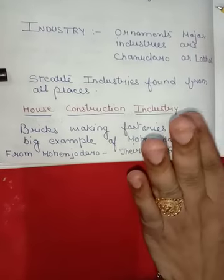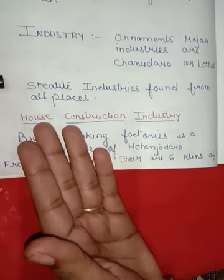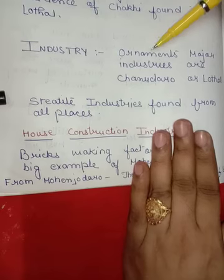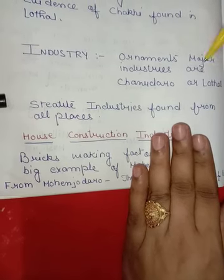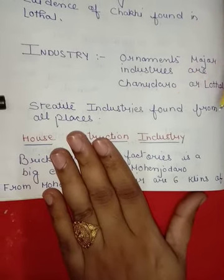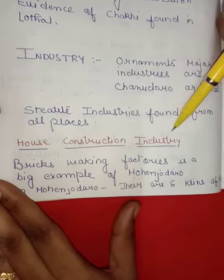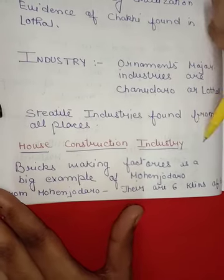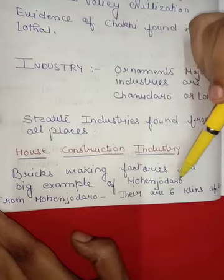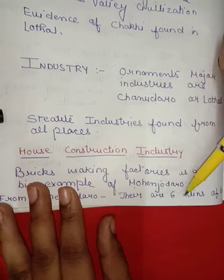In this period, many types of industries were found. First, ornament industries — major ones found from Chanhudaro and Lothal. Stone-ware industry was found from all places. House construction industries were also found. Brick-making factories are a major example from Mohenjo-daro, where six sizes of bricks were found.